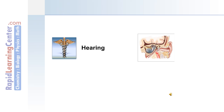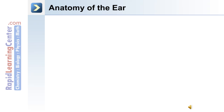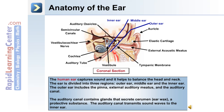The next special sense we'll discuss is hearing, including the anatomy of the external ear, the middle ear, and the inner ear. The human ear is designed to capture sound waves from our environment and also functions to help balance the head and neck. The ear is divided into three regions: the outer ear, the middle ear, and the inner ear. The outer ear includes the pinna, external auditory meatus, and the auditory canal. The auditory canal contains glands that secrete cerumen, or earwax, which is a protective substance, and it transmits sound waves from the external environment to the inner ear.